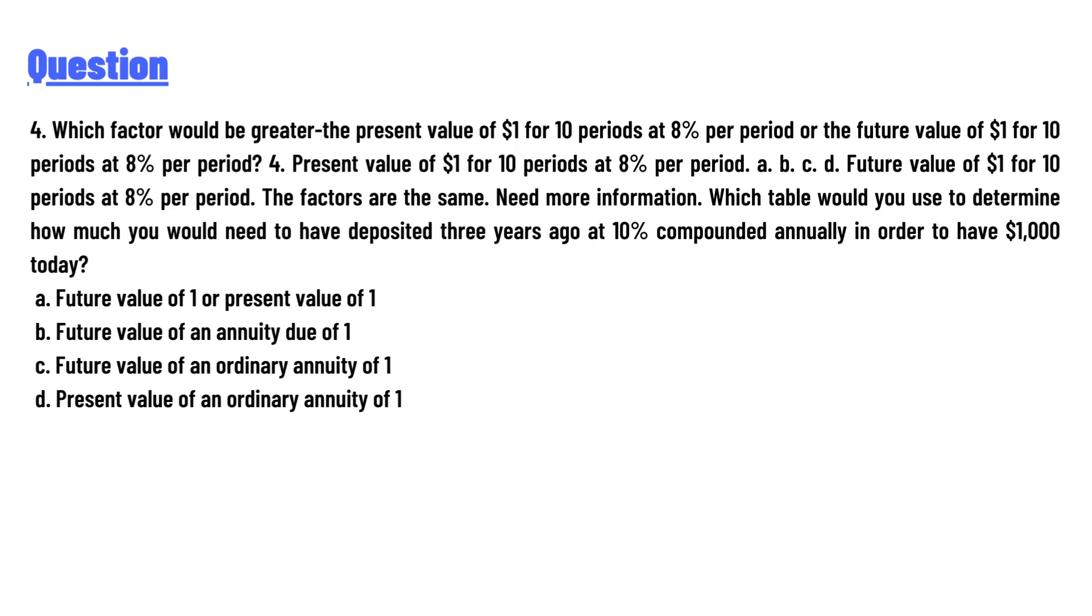For present value of $1 for 10 periods at 8% per period: a, b, c, d. Future value of $1 for 10 periods at 8% per period. The factors are the same. Need more information. Which table would you use to determine how much you would need to have deposited three years ago at 10% compounded annually in order to have $1,000 today?